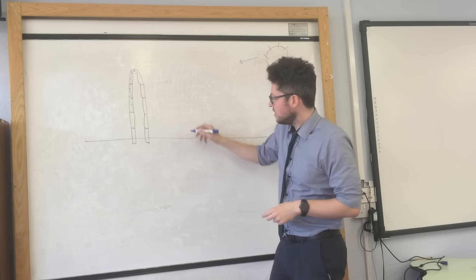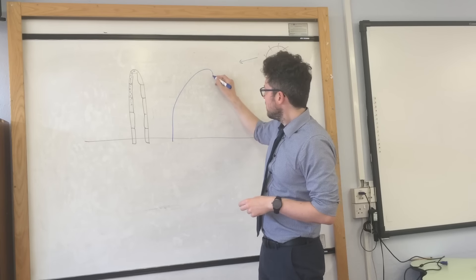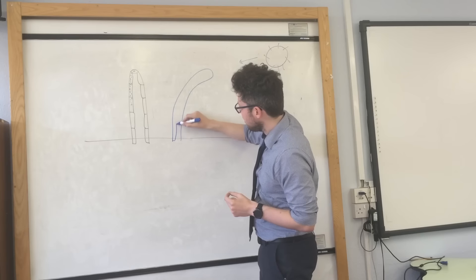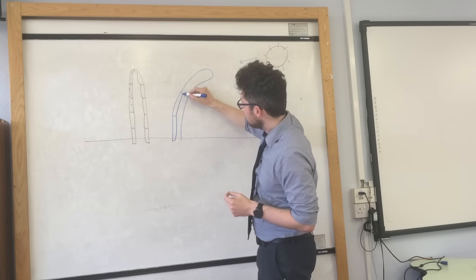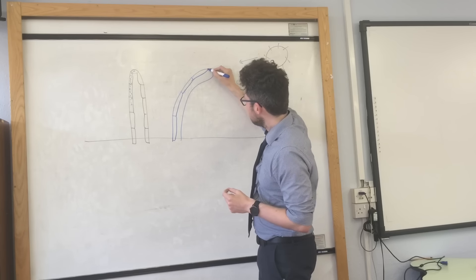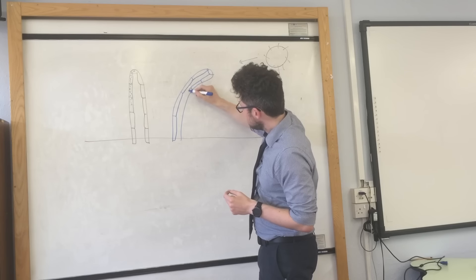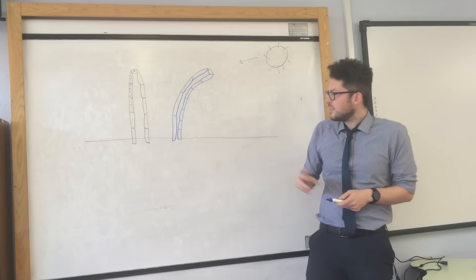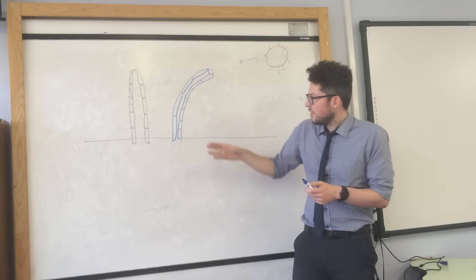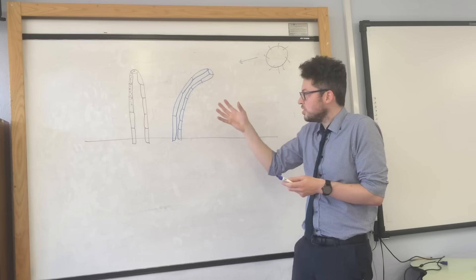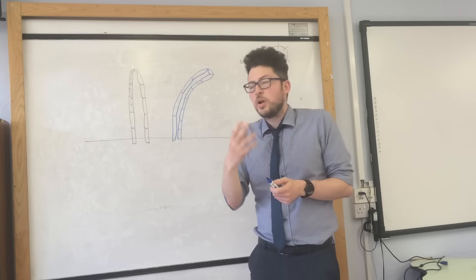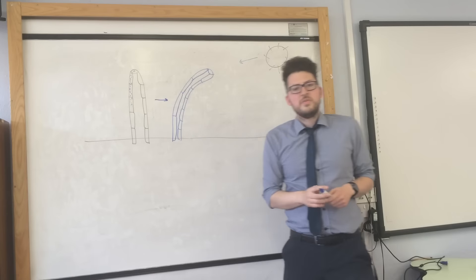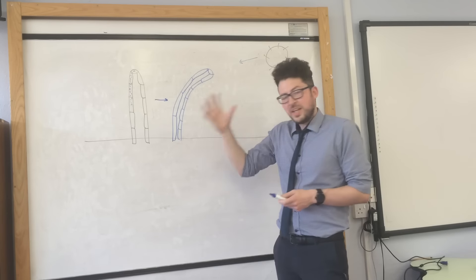This is important because it allows the plant to curve towards the light. If you look at the length of the cells, the cells on the far side have actually grown longer than the cells on the near side. That allows the shoot to bend and grow towards light, allowing it to get maximum light for photosynthesis.